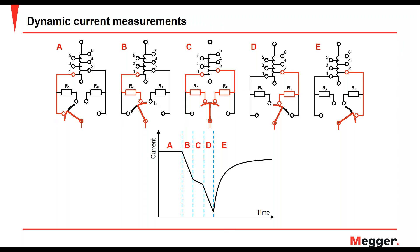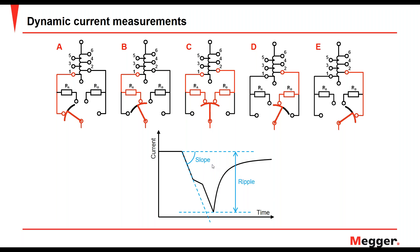Plotting the current during this time: first it's stable, then when we connect a resistor the current drops, when we connect two resistors in parallel the resistance is less so the current drops less, and once done it climbs back to its stable value. This is the dynamic current measurement - we measure this current graph during the operation. We can define two key parameters: the ripple, which tells you how much the current drops in the transition, and the slope, which is how fast it's going down in amperes per second.